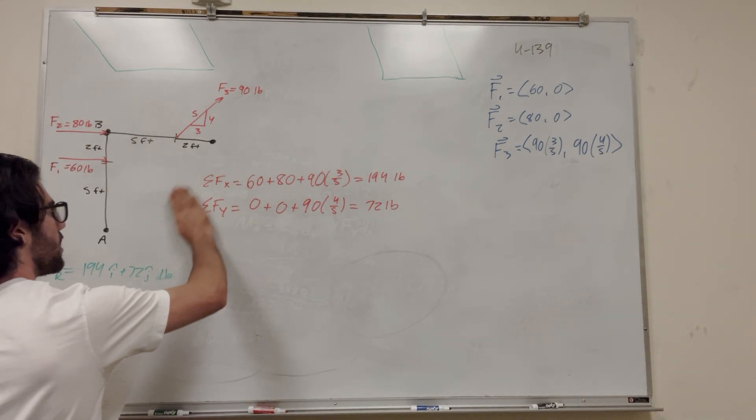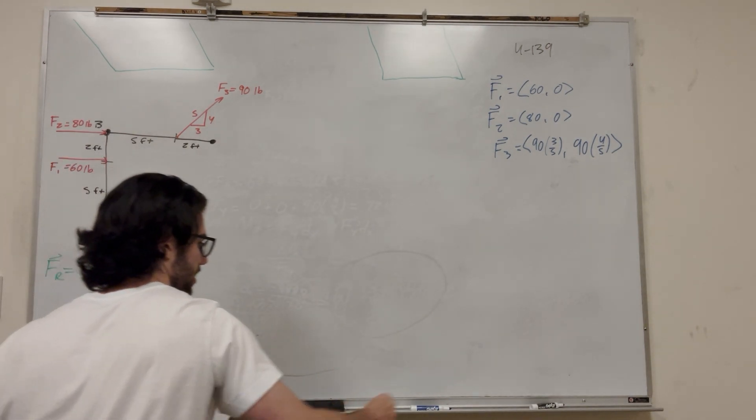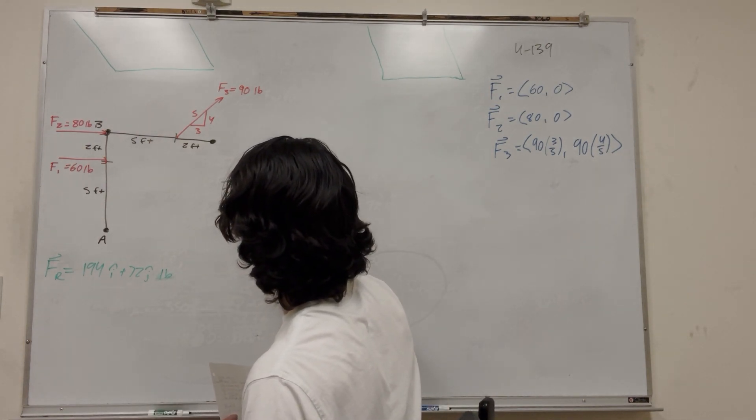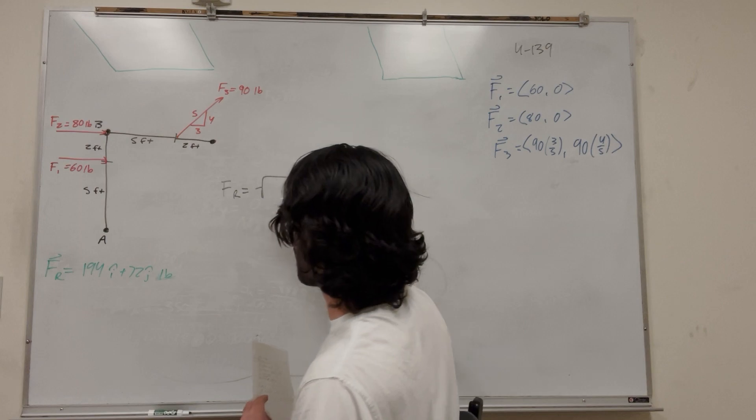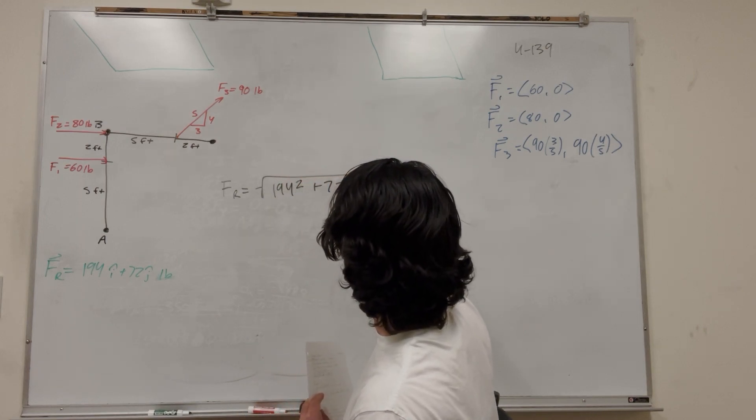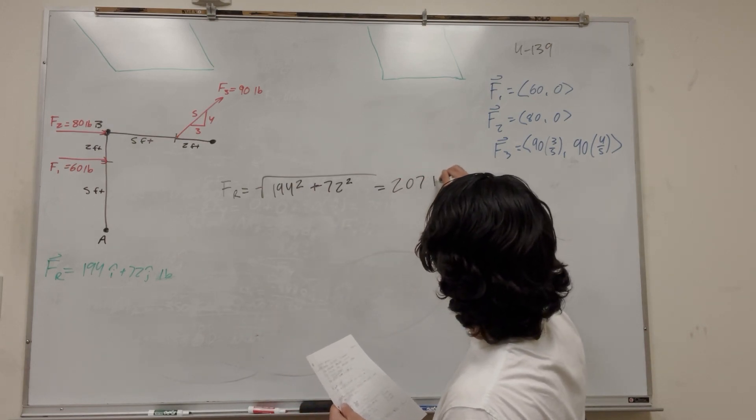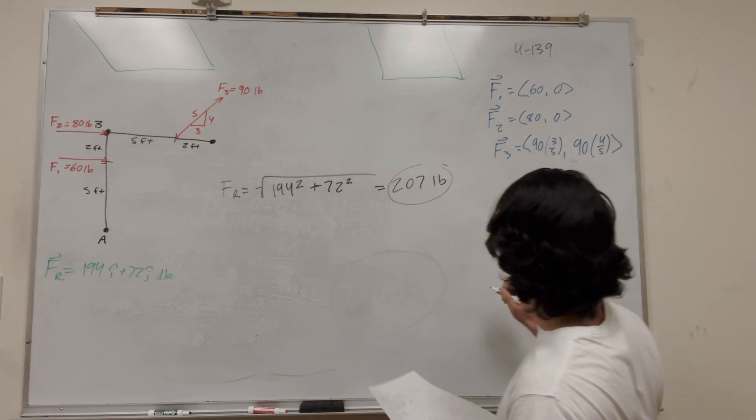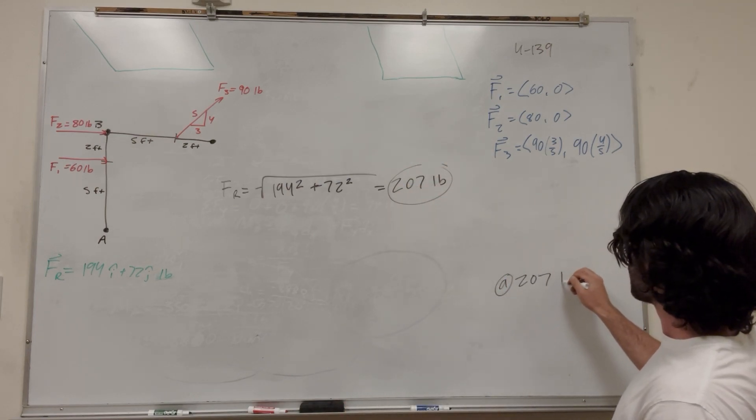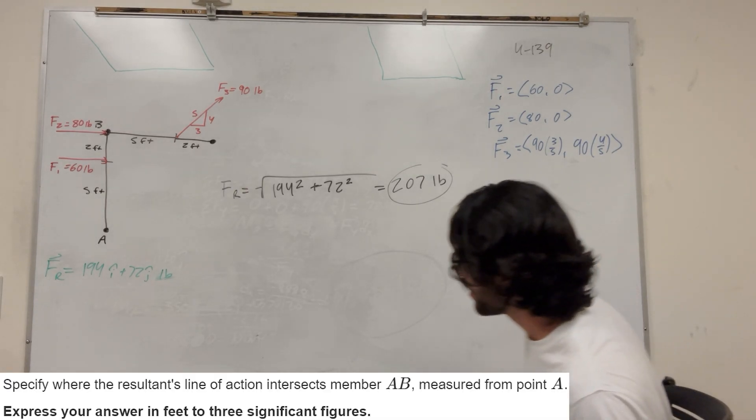Cool. So now we can rewrite that. Then we have our force-resultant vector. It's just going to be 194 i plus 72 j pounds. I hate that we use pounds, but it's cool. Nice. So that's useful. So let's go ahead and find the magnitude of this resultant vector. So, of course, magnitude of the force-resultant is just going to be the square root of the x and the y. So 194 squared plus 72 squared. And that's going to give you 207 pounds. So that's part A.